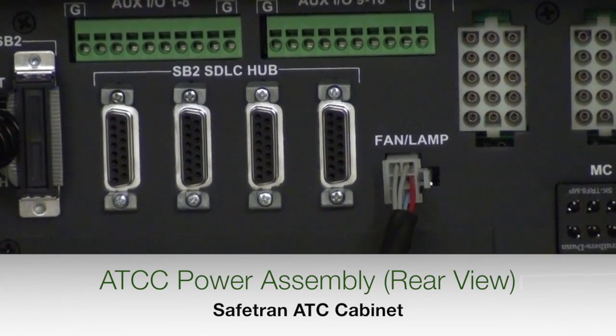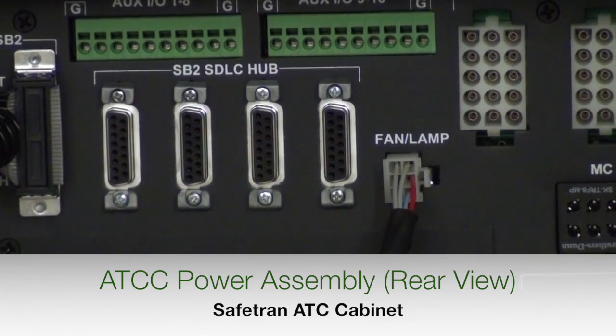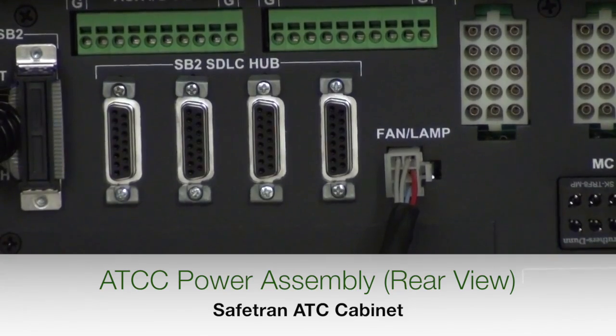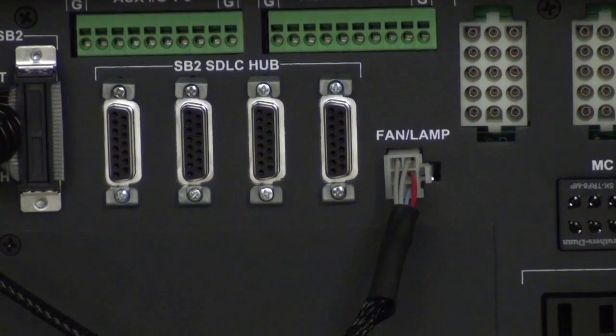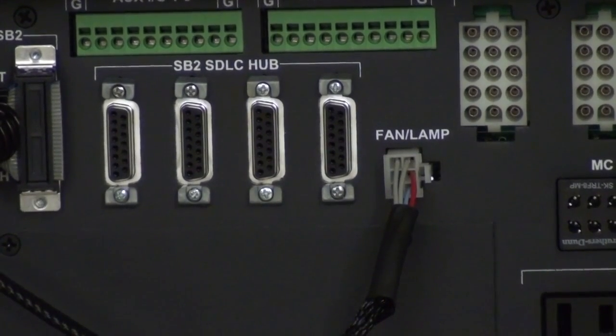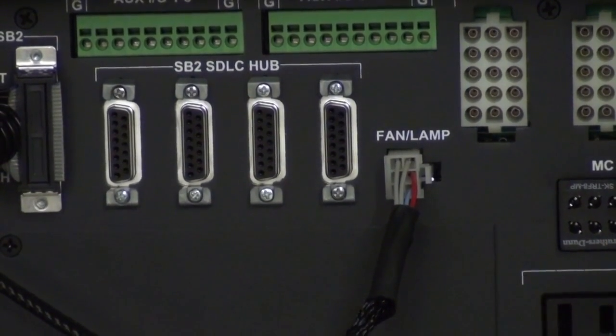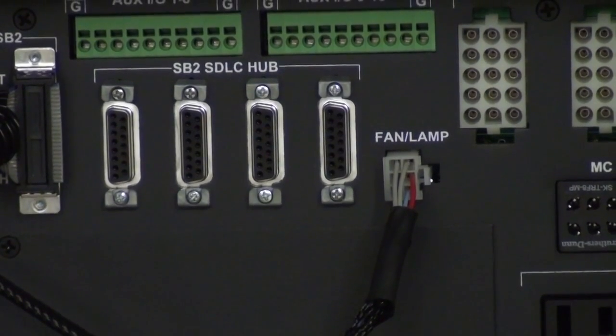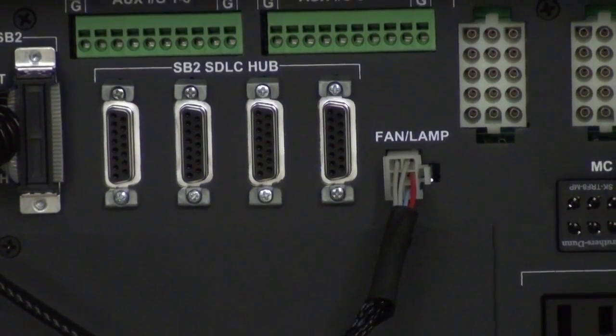The ATC cabinet power assembly includes a NEMA Port 1 SDLC hub, providing the ability to install up to three NEMA TS2-compliant detection devices such as Autoscope. Devices on the SDLC hub communicate with the controller over the ATC Serial Bus 2 port.